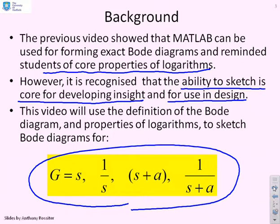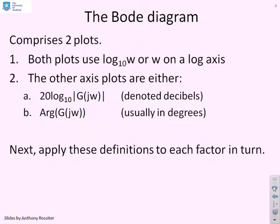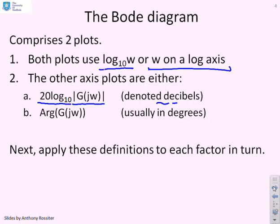We'll look at G(s) as a derivative, G(s) as an integrator, G(s) = s+a, or G(s) = 1/(s+a), and show how to sketch Bode diagrams for these simple examples. As a reminder, the Bode diagram has log₁₀(ω) on the horizontal axis, and on the vertical axis either 20 log₁₀ of the gain in decibels, or the argument of G(jω).